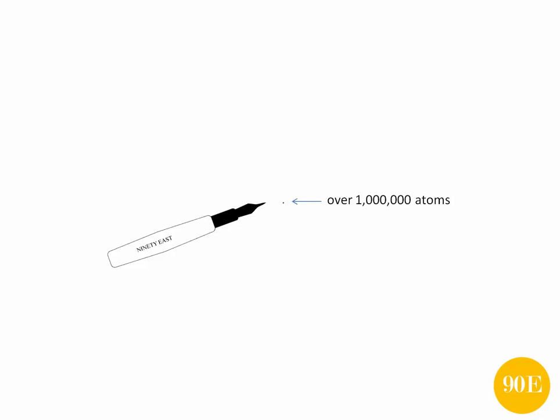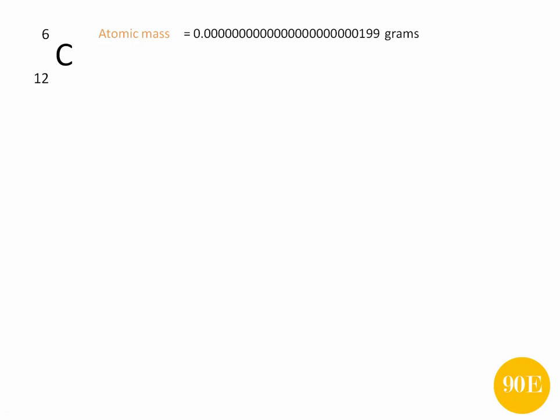This means that the mass of individual atoms is really small. Take carbon-12 for instance. If we were to write its atomic mass in grams, it would look like this. If you were to try to abbreviate it, it would look like this, which is a little bit more manageable, but still difficult to use.